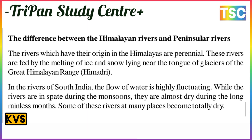The difference between the Himalayan rivers and the Peninsular rivers: the rivers that have their origin in the Himalayas are perennial, and these rivers are fed by the melting of ice and snow near the tongues of the glaciers of the great Himalayan range. But in the rivers of south India, the flow of water is highly fluctuating. While the rivers are in spate during the monsoon, they are almost dry during the long rainless months, and some of these rivers at many places become totally dry.